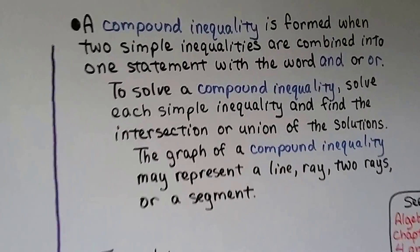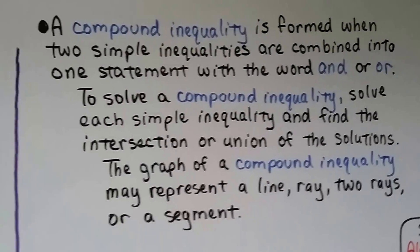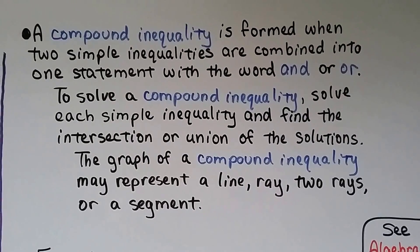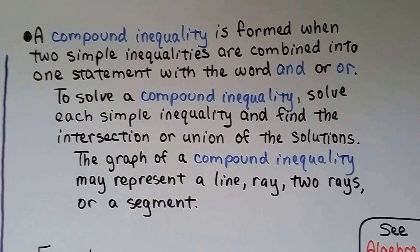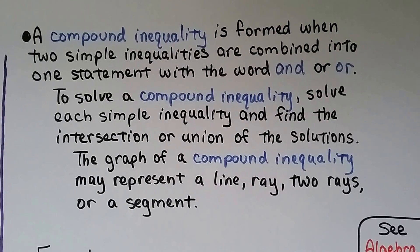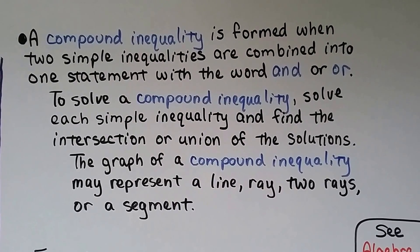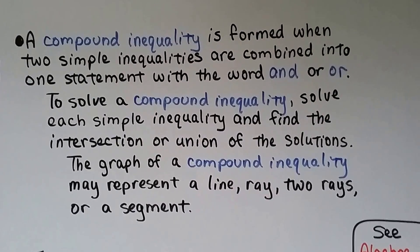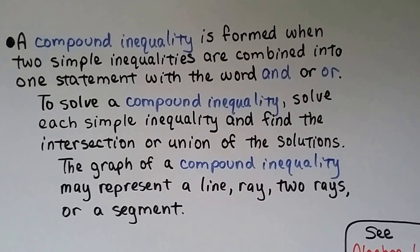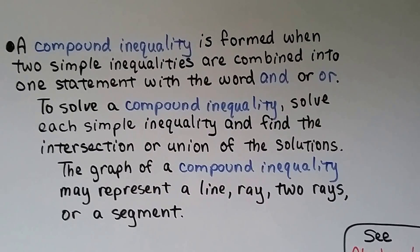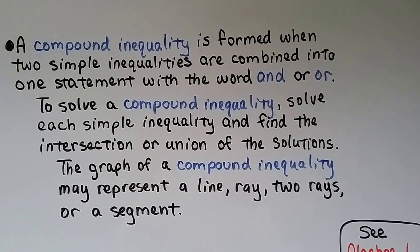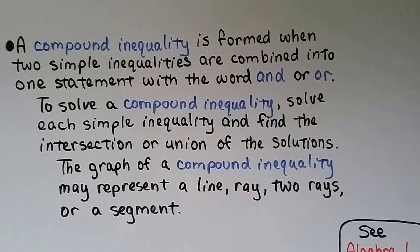A compound inequality is formed when two simple inequalities are combined into one statement with the word AND or OR. To solve a compound inequality, we solve each simple inequality and find the intersection or union of the solutions. The graph of a compound inequality may represent a line, ray, two rays, or a segment.